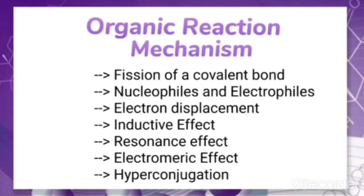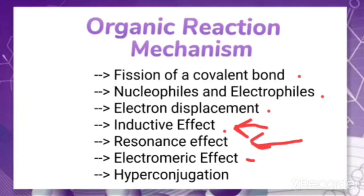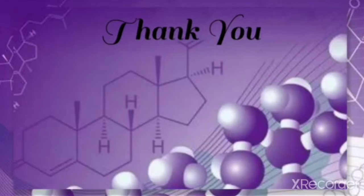In the following sections we shall learn some of the principles that explain how these reactions take place. We will be discussing: how the fission of a covalent bond takes place, what are electrophiles and nucleophiles, how electron displacement occurs and the symbols for representing it, and the effects of electron displacement — that is, inductive effect, resonance effect, electromeric effect, and hyperconjugation. So this is all about this video, have a nice day.